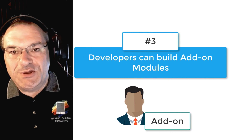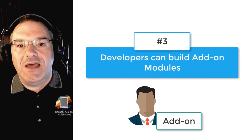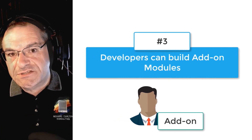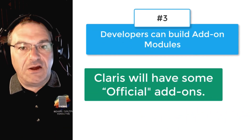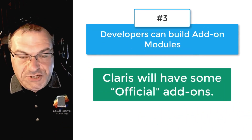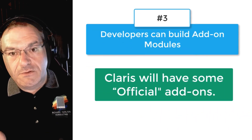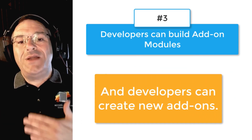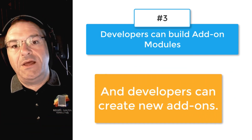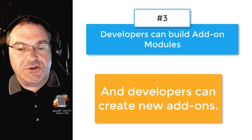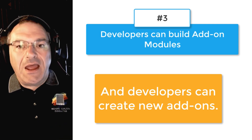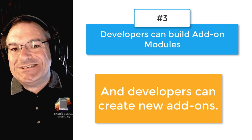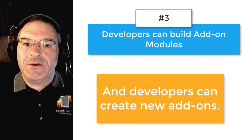Number three on the list is that developers can build these add-on modules themselves. The plan going forward is that Claris will have some official add-on modules available. Then third-party developers can develop their own add-on modules, which can be free or purchased. This creates an entire ecosystem of add-on capabilities that can easily extend your FileMaker custom app.